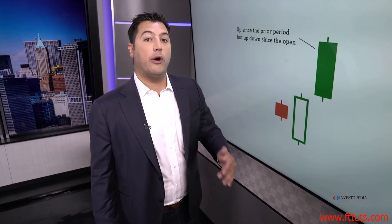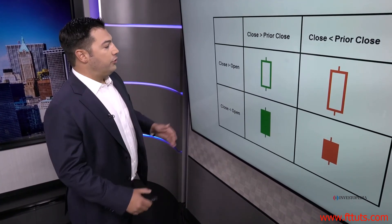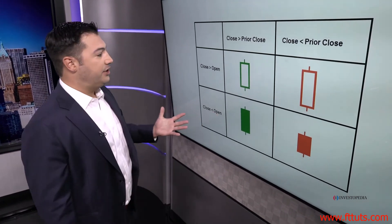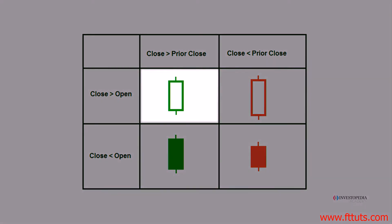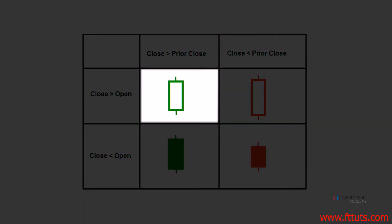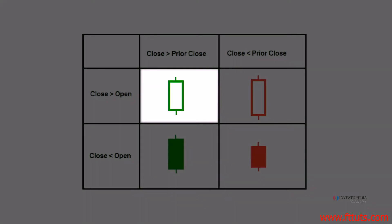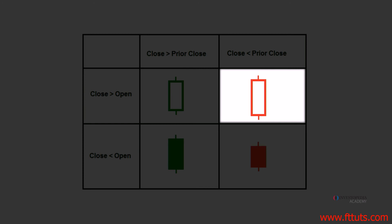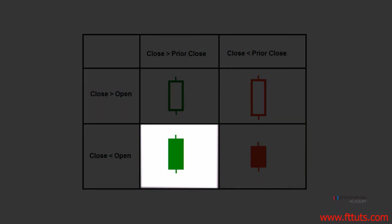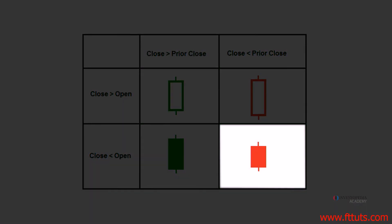So there are four types of candlesticks that we're essentially accustomed to seeing: green hollow ones, red hollow ones, green filled ones, and red filled ones. So let's go over this again. If you have a green hollow candle, that means the close is above the opening price and the close is also above the prior close. The red hollow candle is going to close above the opening price but below the prior day's close. The green filled candle is going to close below the open but still above the prior day's close. And the red filled candle is going to close below the open as well as below the prior day's close.